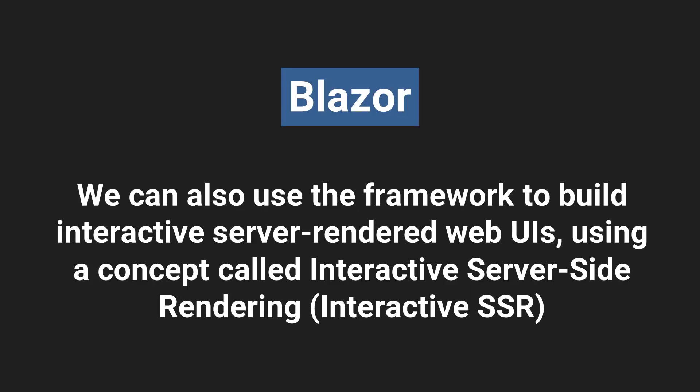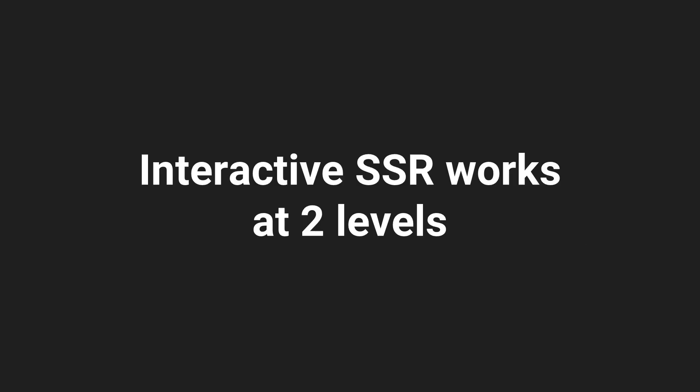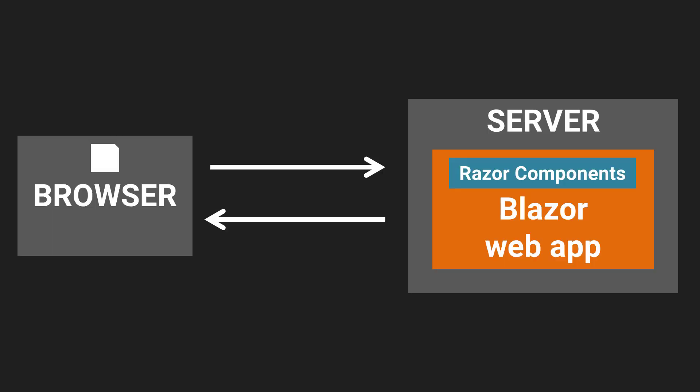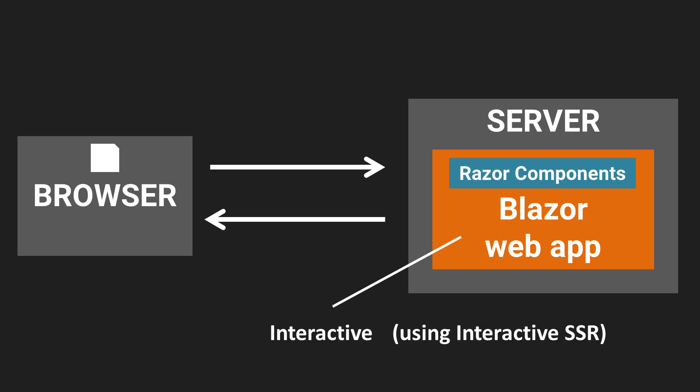We can also use Blazor to build interactive server-rendered web UIs using a concept called interactive server-side rendering, or interactive SSR. This works at two levels. First, we can have global or root-level interactivity, where the entire application with all its Razor components is interactive. A SignalR connection is established between the browser and the server, and over this connection, UI events from the browser are sent to the server and UI updates are sent back in real time.